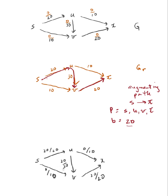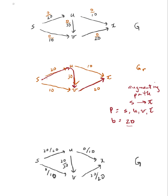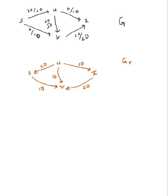Now I repeat this process using the updated graph. I compute my residual graph from this new flow network. From S to U, I've got no more capacity to push forward, but I can undo 20 units. From U to T, I can push forward 10 units with nothing to undo. From V to T, nothing to push forward, but I can undo 20 units. From S to V, I can push forward 10 units. From U to V, I can push forward 10 units and push back 20 units.